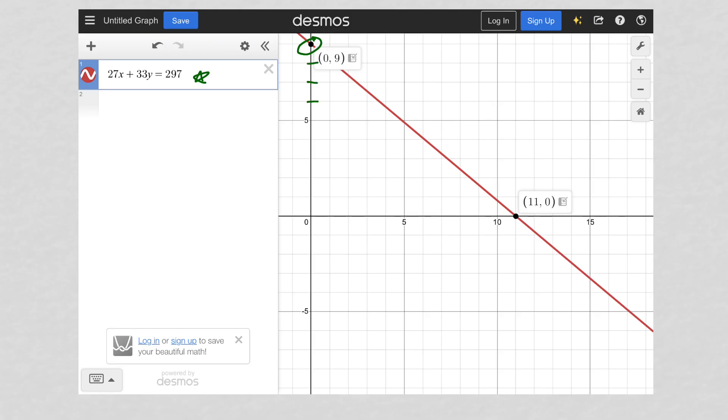one, two, three, four, five down, I would be at zero, four. So that's another way to solve this question using Desmos.